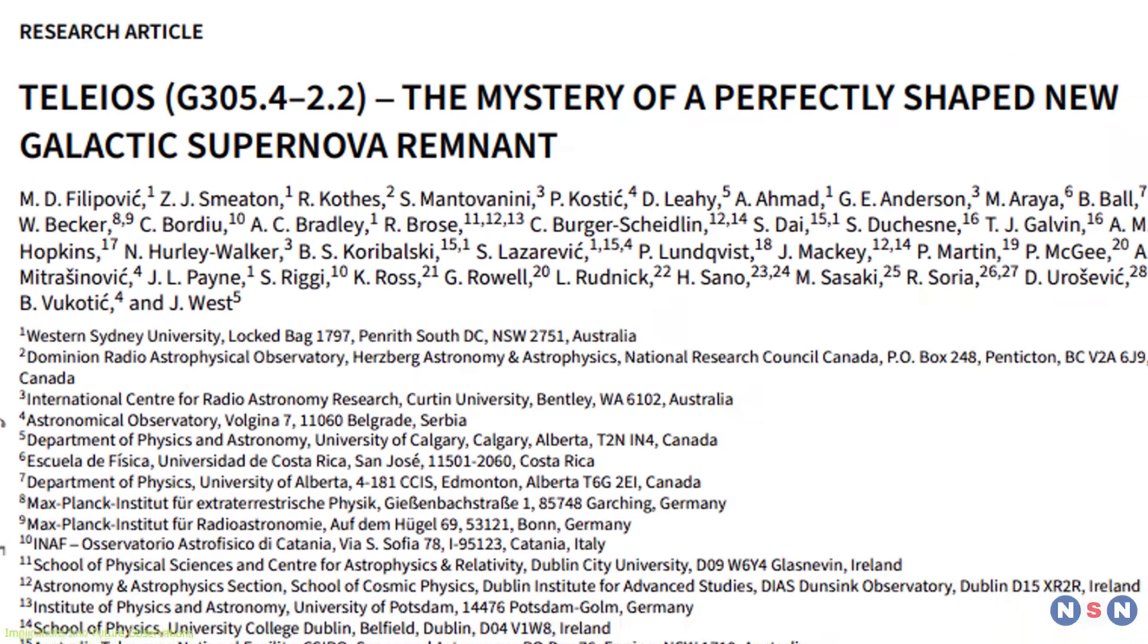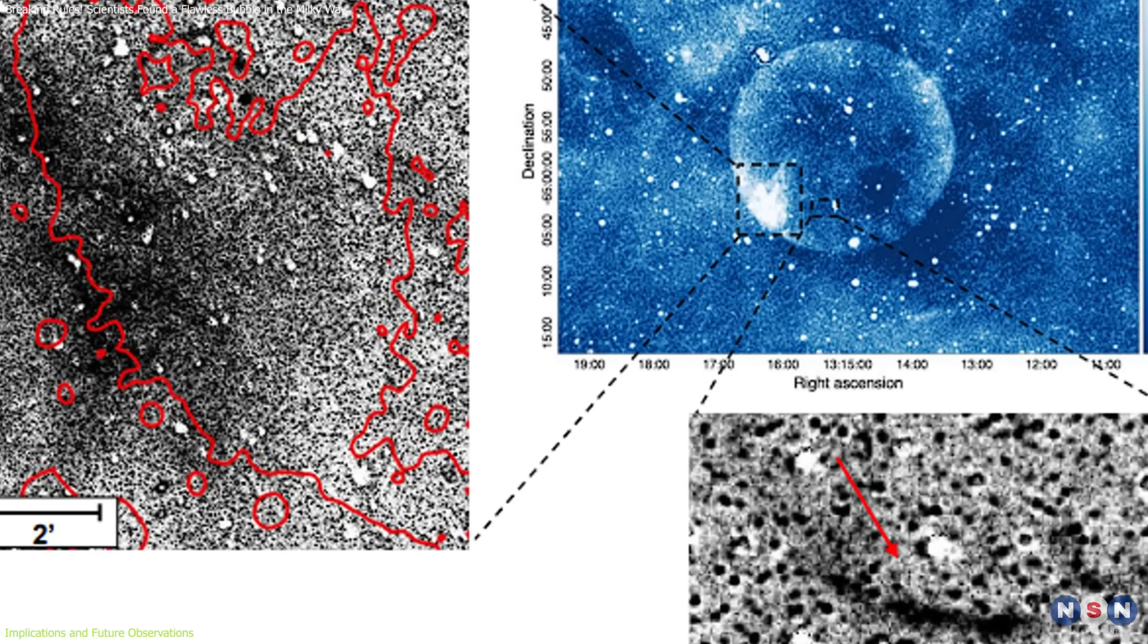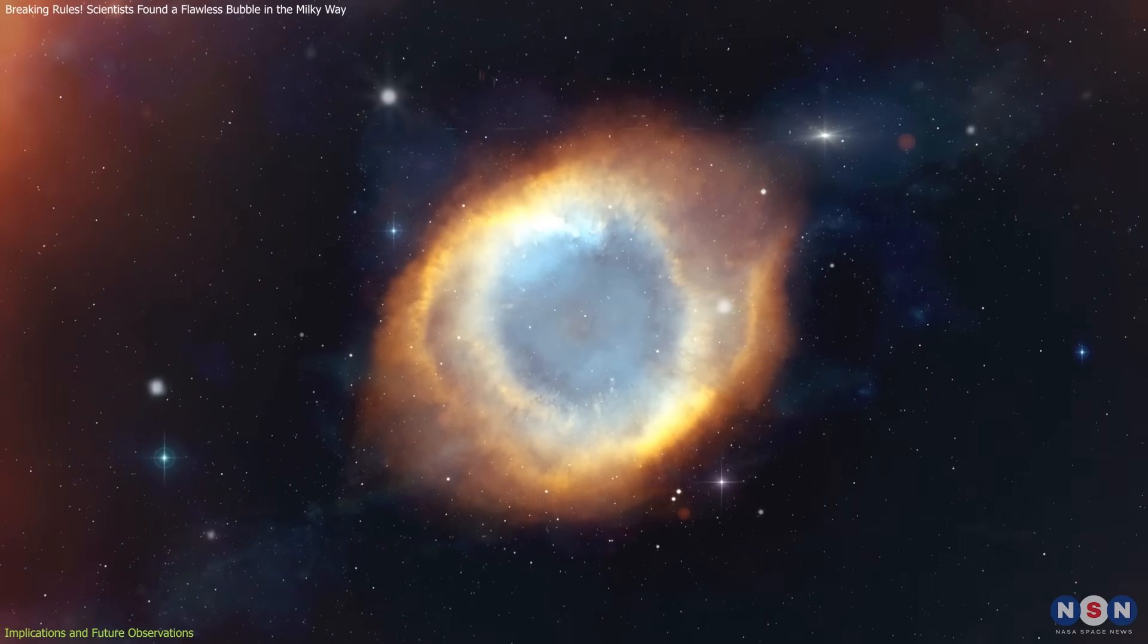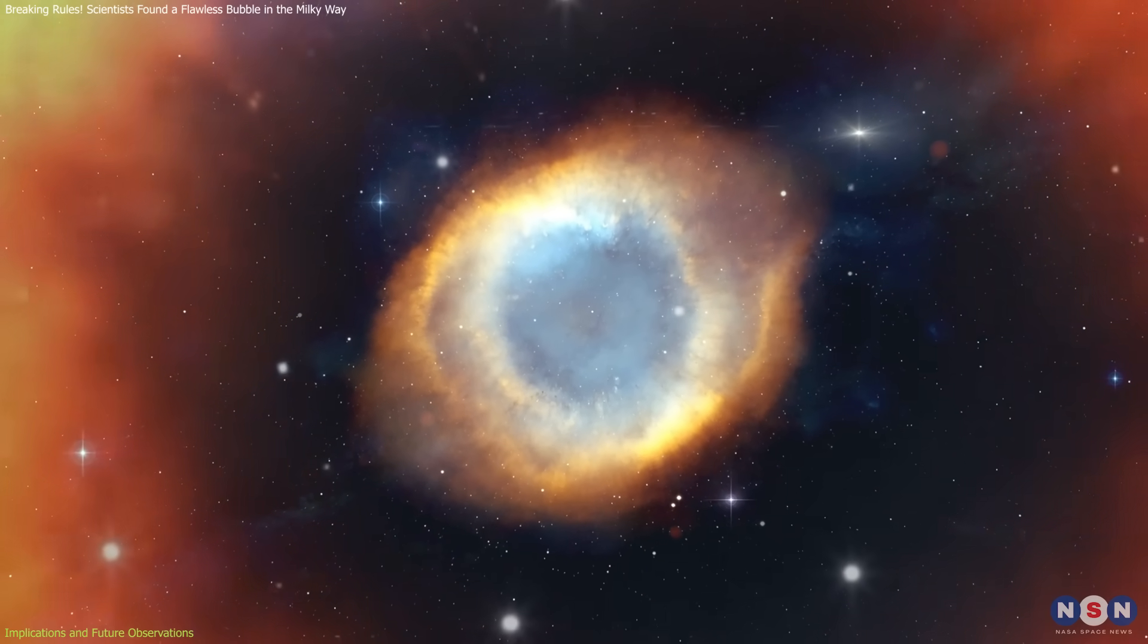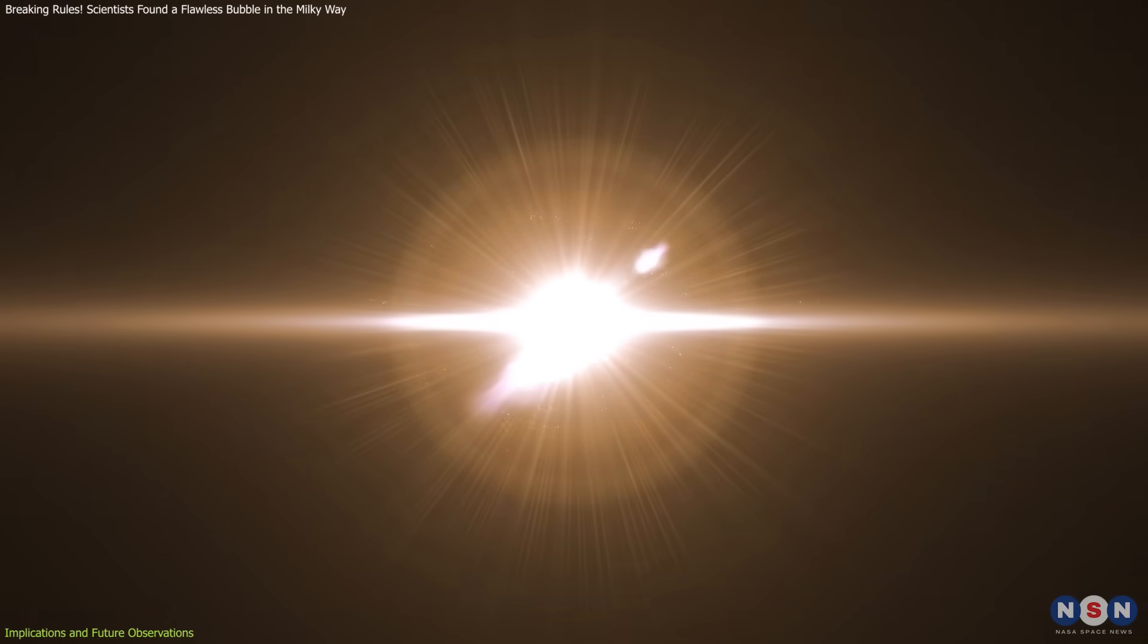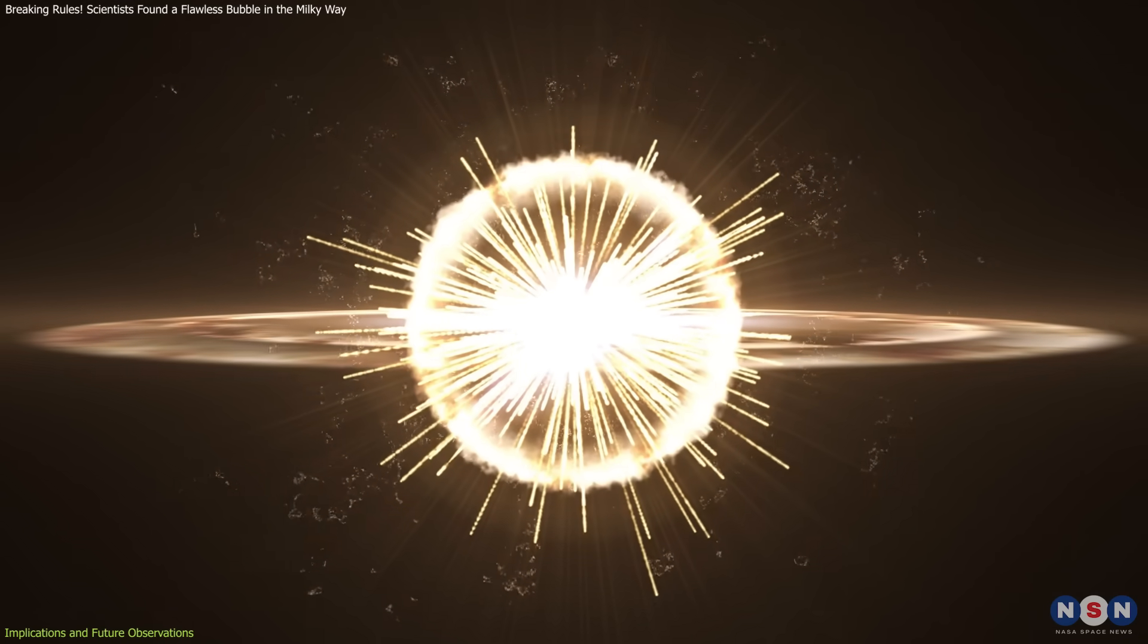The discovery also opens new investigative paths. Researchers are watching the southeastern edge of Teleos, where a slight enhancement in radio emission might signal the early stages of interaction with nearby interstellar material. If confirmed, this could help estimate its expansion velocity and narrow down its age.